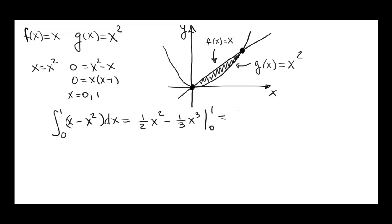We plug in 1, get 1 half minus 1 third. That's equal to 3 over 6 minus 2 over 6, which is equal to 1 over 6. And that's the answer. That's the area.